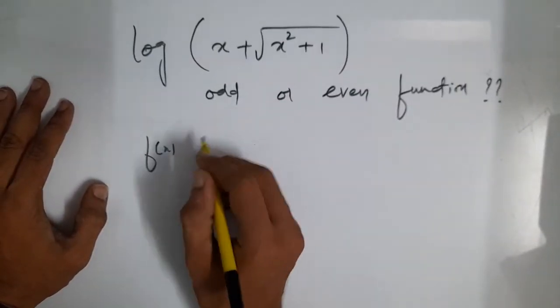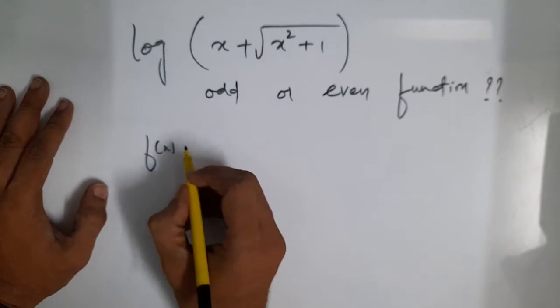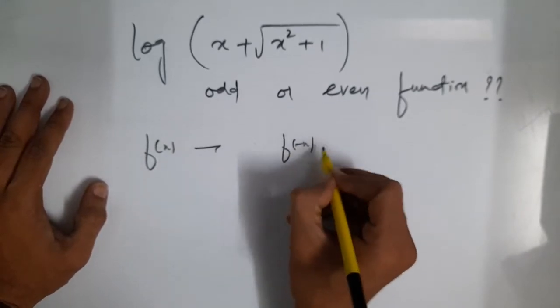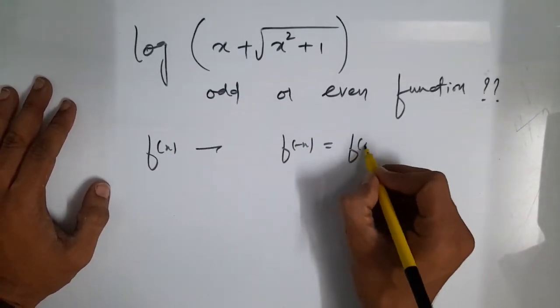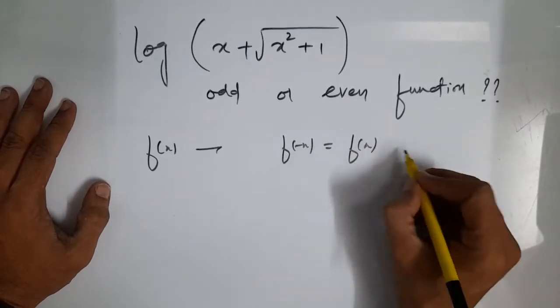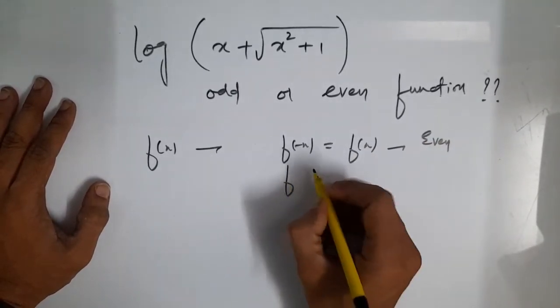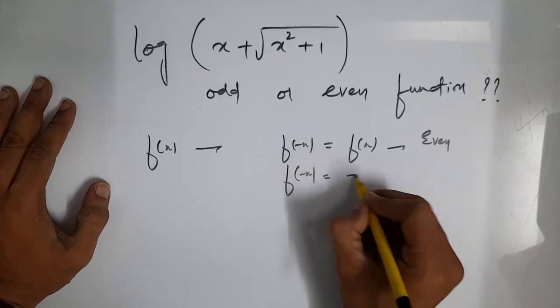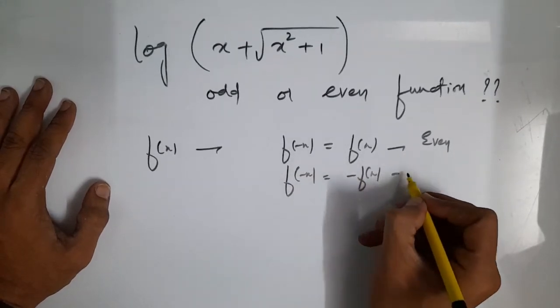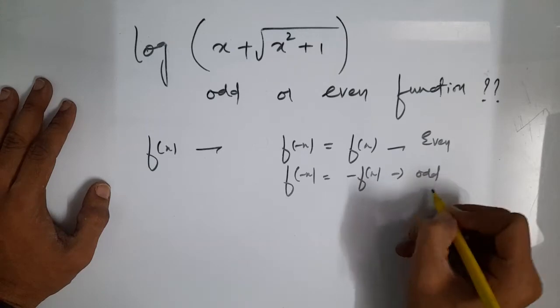Students, at least we know that any function which follows this rule: if f minus x, if f x may end up, this kind of function is even function. And if minus x equals minus of f x is an odd function.